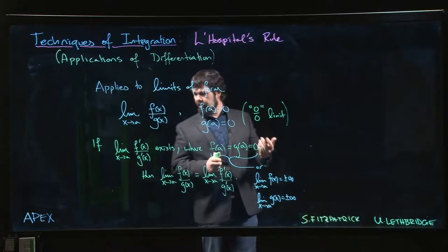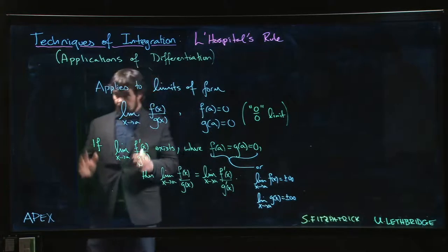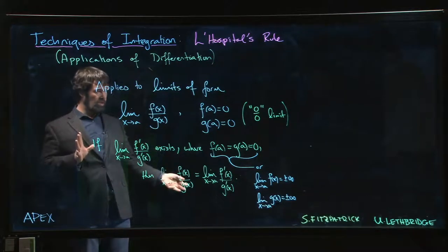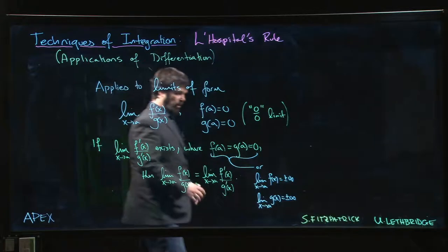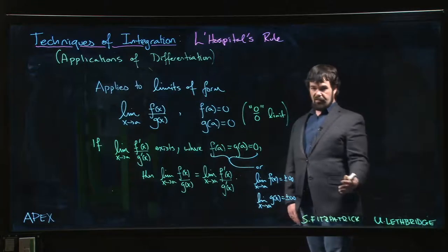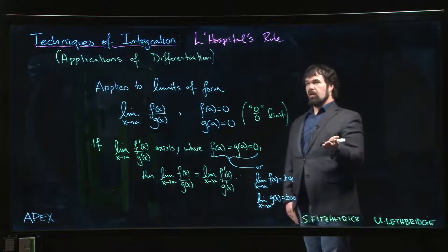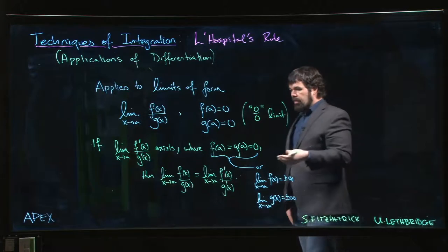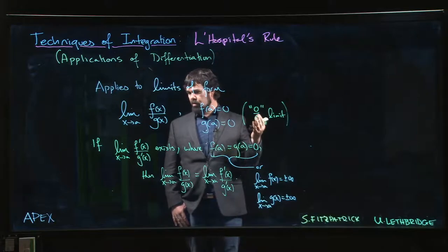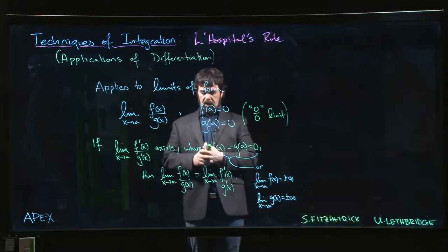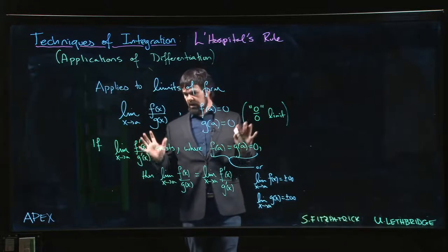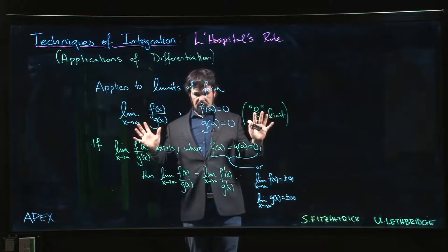If you took calculus in high school you may have seen L'Hopital's rule early on, and then in university calculus you're annoyed that you didn't get to use it right off the hop when evaluating limits. But there are reasons for that — one being that you need to understand derivatives properly before you can use them to evaluate limits with L'Hopital's rule. To understand why L'Hopital's rule is true, the proof requires a refinement of the mean value theorem called Cauchy's mean value theorem. We're not going to prove L'Hopital's rule — we're just going to show you how to use it.